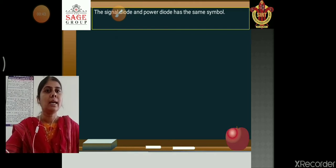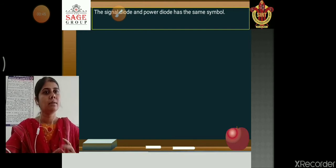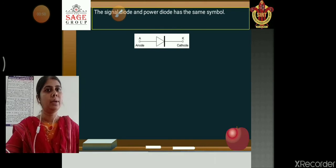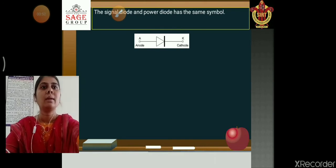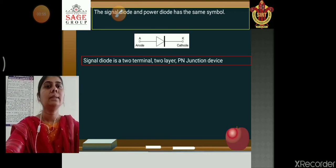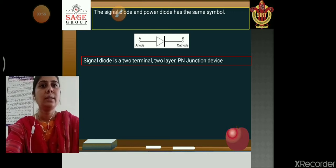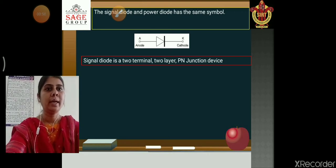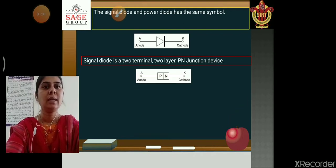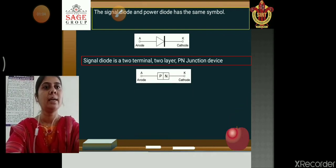The signal diode and power diode have a similar symbol — anode, cathode. Signal diode is a two-terminal, two-layer P-N junction device, with P and N layers connected to anode and cathode.